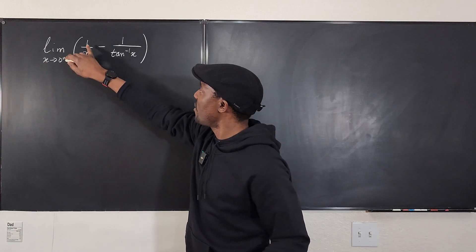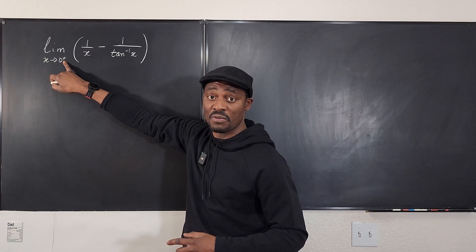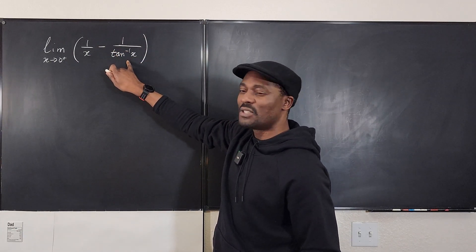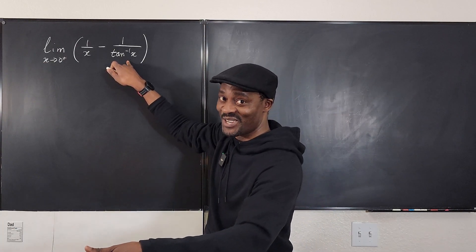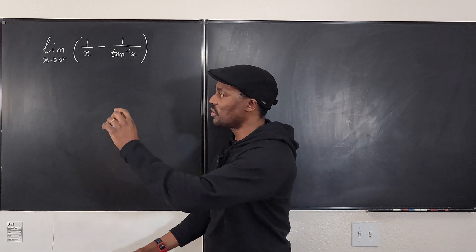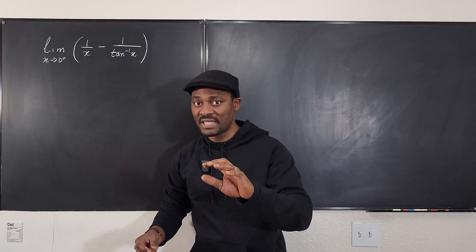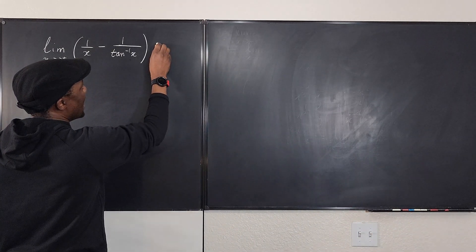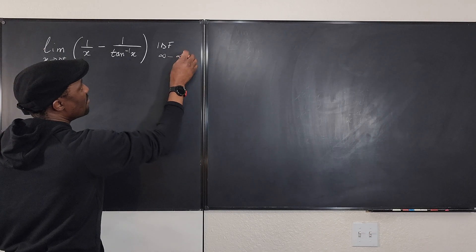So if we plug in zero into this, what do we get? We get one over zero, which is infinity — and we know it's going to be positive infinity because we're approaching zero from the right. So this is going to be one over arctan(0). The tan of zero is zero, so arctan of zero has to be zero. Here we have a situation where we have one over zero, which is infinity, minus one over zero, which is also infinity. You cannot have infinity minus infinity — that's indeterminate because you don't know which of the infinities is bigger. So we have an indeterminate form of the type infinity minus infinity.